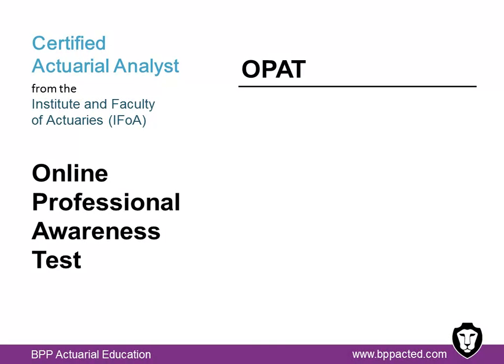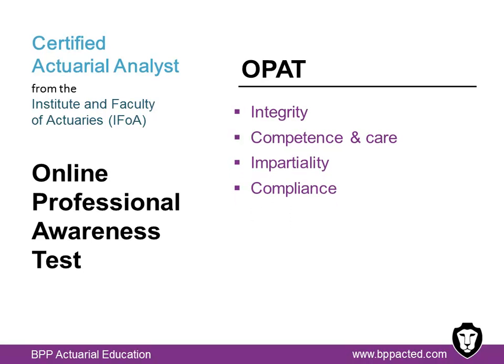The online professional awareness test ensures that new entrants to the IFOA have a robust understanding of the actuary's code, as well as the obligations to which the code binds you as a member of a professional body. This exam must be sat and passed within one full year of joining as a student actuarial analyst. It's a one-and-a-half-hour online exam and it's recommended that you'll need between one and five hours of study. The exam consists of five three-part questions covering each of the five core principles of the actuary's code: integrity, competence and care, impartiality, compliance and open communication. The questions will test your ability to exercise judgment in compromising ethical situations, including those where you may need to seek advice from senior colleagues.